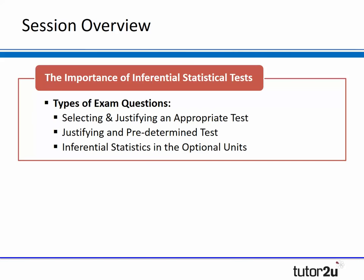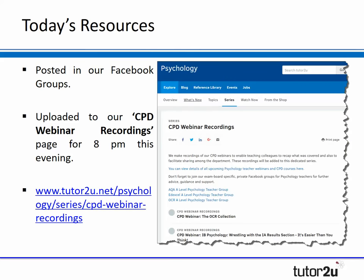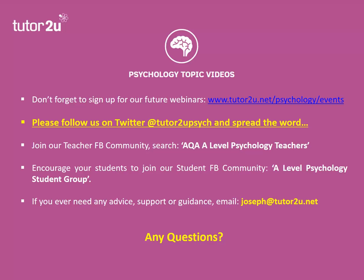So there we have it — inferential stats is such an important area because it can appear almost anywhere, with two key question types: selecting and justifying, and justifying a predetermined test — all of which can be answered using the decision tree. All resources will be posted in our Facebook groups and uploaded to our CPD Webinar Recordings page. If you have any questions, please don't hesitate to contact us via social media or email. We've covered that in exactly 15 minutes — I hope you found those activities and ideas helpful.